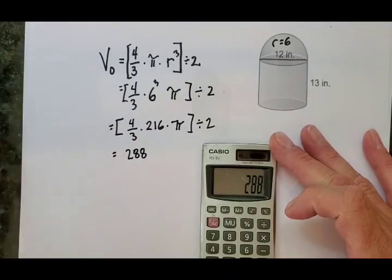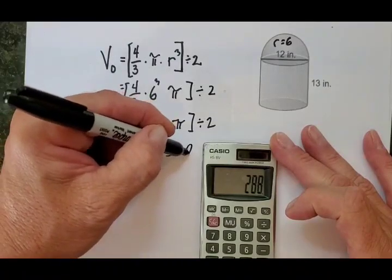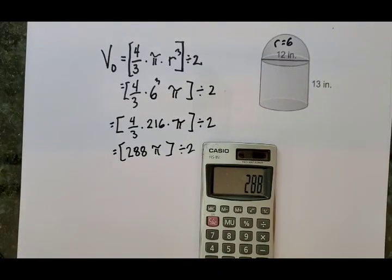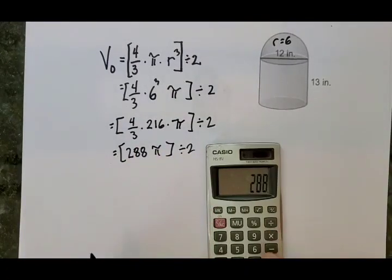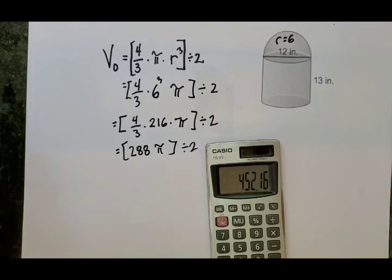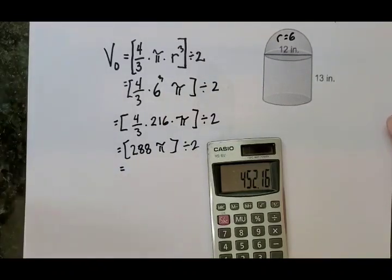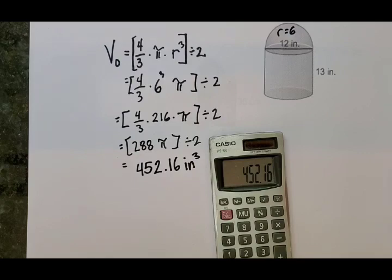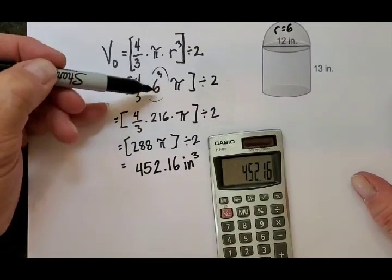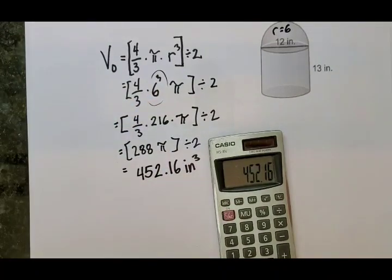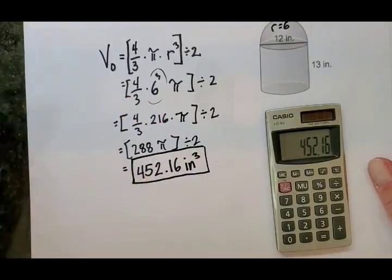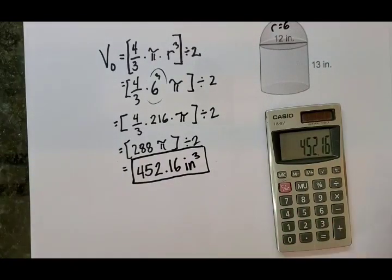And then we have pi. This is just the sphere volume formula, and then we divide by two. I'm going to multiply by 3.14 and then divide by two. So for the half sphere, we have 452.16 cubic inches. The cubic inches come from the radius being six inches, cubed. That's the volume of the half sphere — I'm going to mark that so I know to go back and add it with the volume of the cylinder.